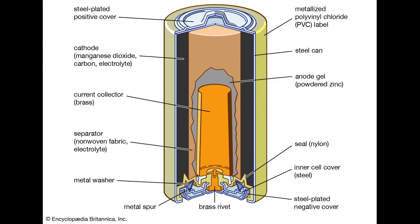Experiment 2 — Battery Dissection. Objective: Explore the components of a lithium-ion battery. Procedure: Disassemble a discarded lithium-ion battery, for example from a smartphone. Identify and discuss the components, including the lithium cathode and anode. Discuss the electrochemical reactions that occur during battery operation. Safety precautions: Use appropriate tools and handle the battery with care, avoiding contact with internal components.